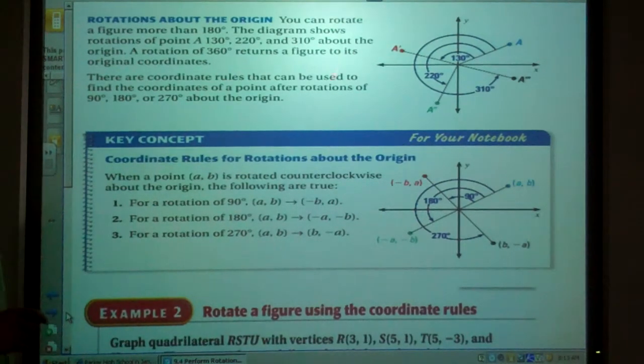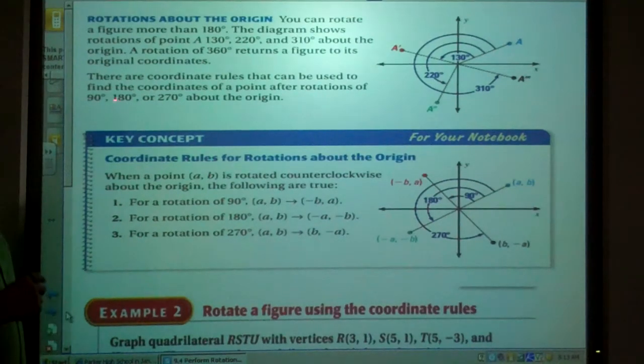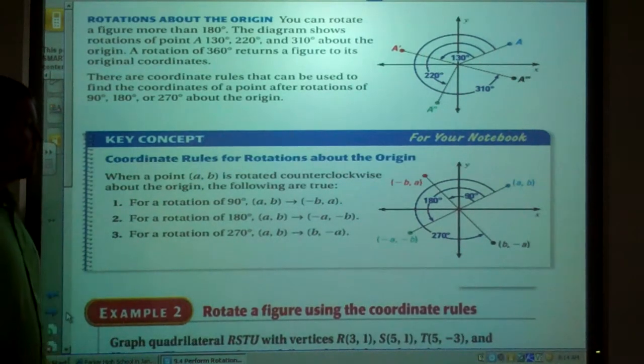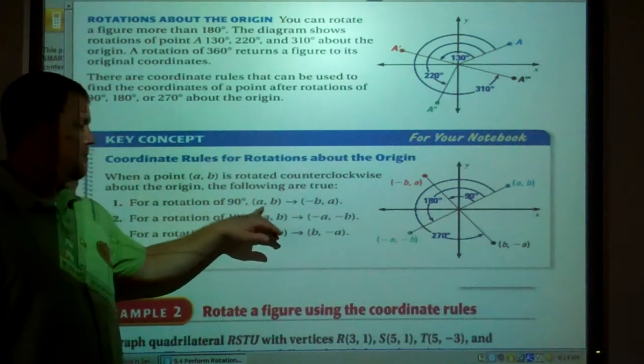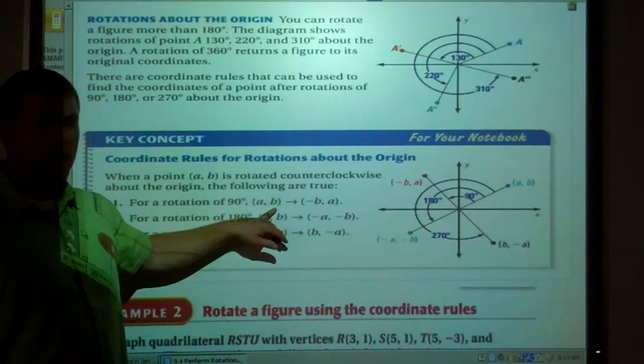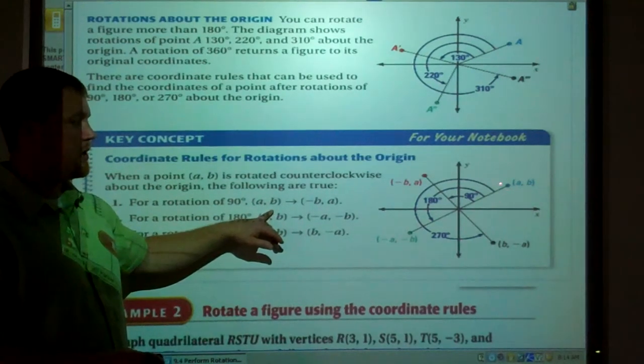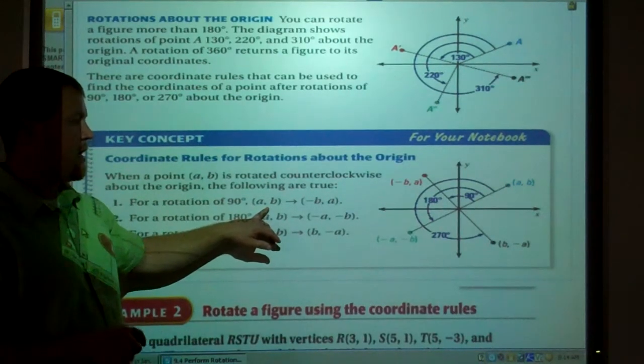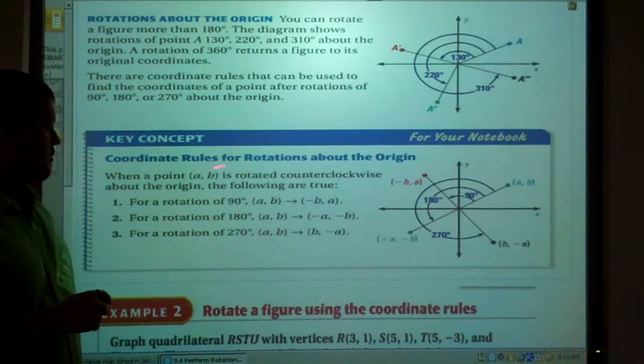There are some specific coordinate rules for 90 degree rotations, 180, or 270 degree rotations. Those are right here. For a 90 degree rotation, if you have a point (a, b), it doesn't matter where a, b is. It can be here, it can be over here. It doesn't matter.